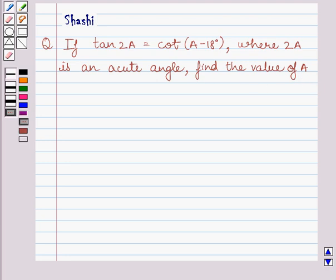First of all, let us understand that cot(90 - θ) is equal to tan θ, where θ is any acute angle in a right triangle. This is the key idea to solve the given question.